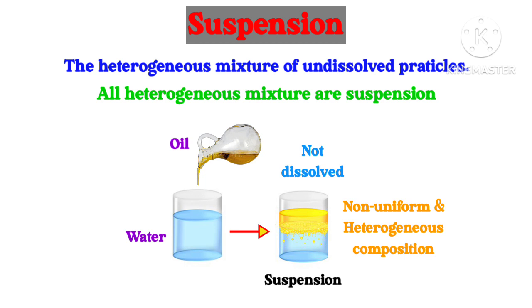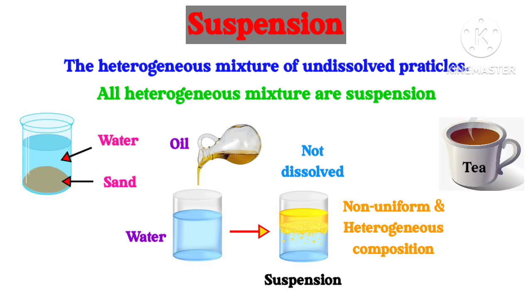So it is a heterogeneous mixture, or suspension. Some other examples of suspension are sand plus water and tea. In sand plus water, we can spot the layer of sand and the layer of water. In tea, we can spot the small particles of tea in the column of liquid. Thus, remember: suspension is a heterogeneous mixture in which particles are large enough to be seen by the naked eye. If a suspension is left for some time, the large, undissolved particles settle down to the bottom due to gravity.